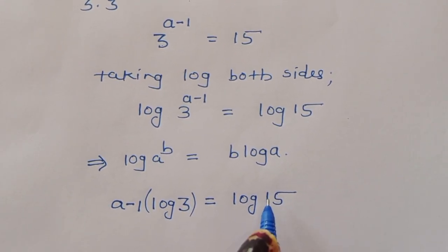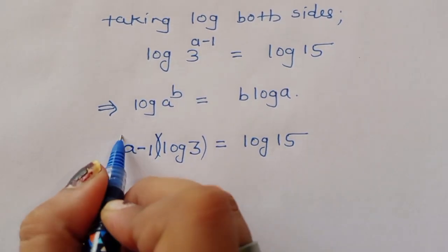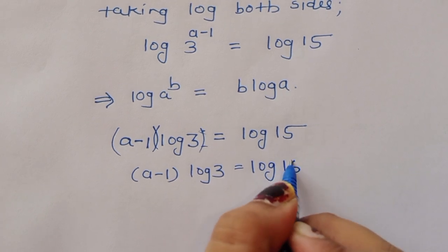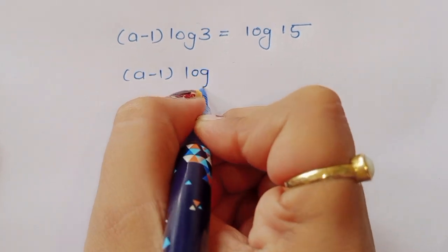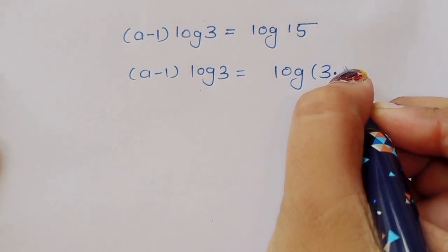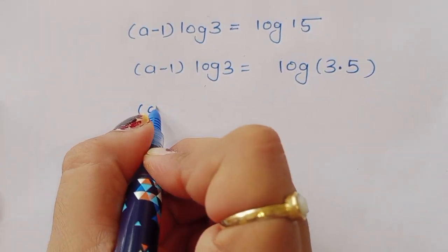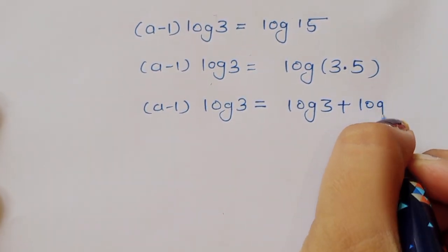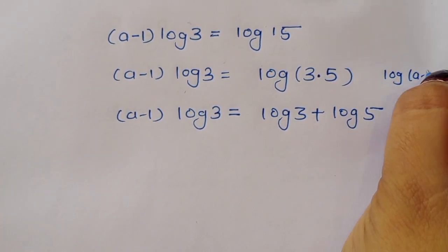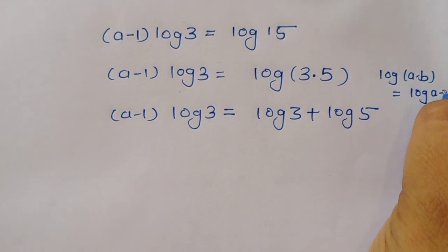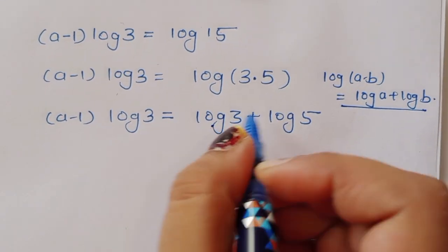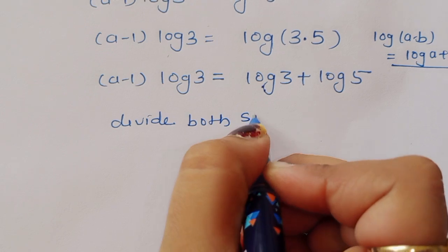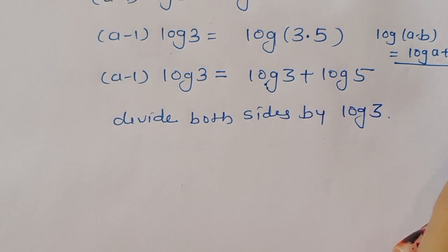So a minus 1 times log of 3 is equal to log of 15. We can write log of 15 as log of (3 times 5), which equals log of 3 plus log of 5, using the formula log(a times b) equals log a plus log b. Now divide both sides by log of 3.